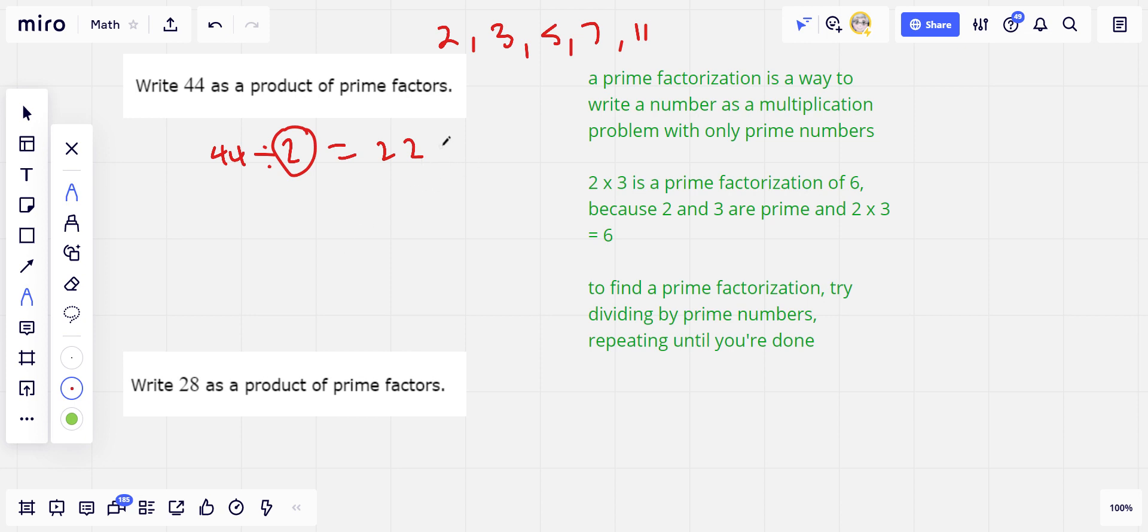Now 22, it looks like we can divide that by 2 again. So I'm going to divide that by 2, and that gives us 11. So I got another 2. And 11 is prime, so that is a factor too.